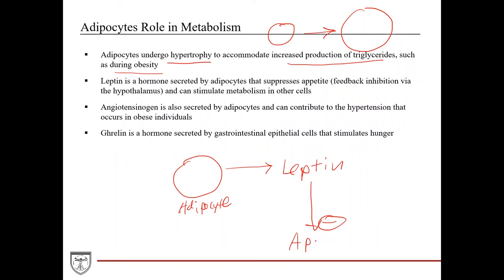Leptin acts in the hypothalamus to feedback-inhibit appetite. When adipocytes grow and are storing triglycerides, you've got enough energy and don't need to eat anymore. So adipocytes secrete leptin as a signal that there are enough triglycerides and no more consumption is needed. Leptin can also stimulate metabolism in other cells.